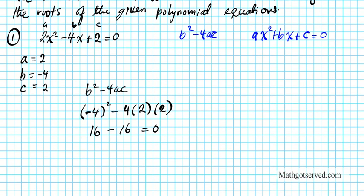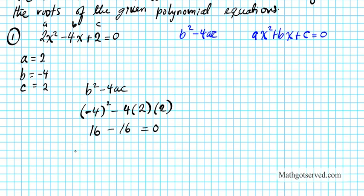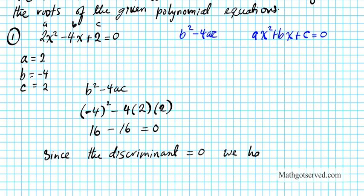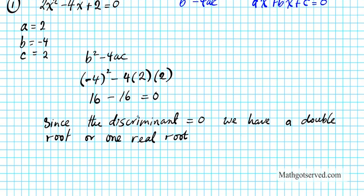So if the discriminant equals 0, we have a double root — one real root. Also note that this real root is going to be rational, a real rational root in this particular case. There's no square root symbol involved.